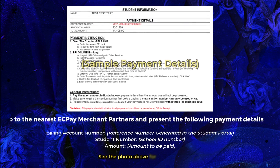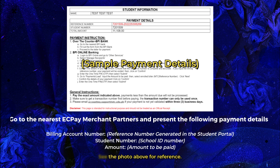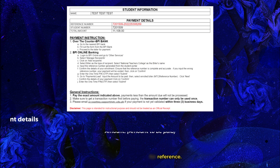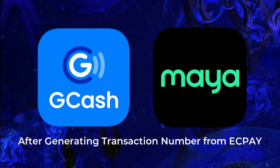Go to the nearest EasyPay Merchant Partners and present the following payment details: Billing Account Number, which is your transaction number generated in the student portal; your student number; and the amount to be paid.